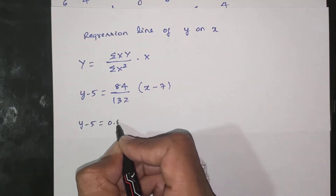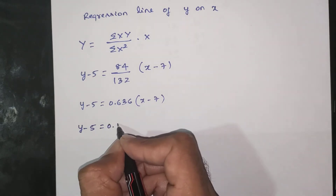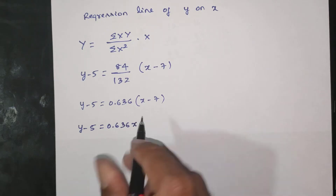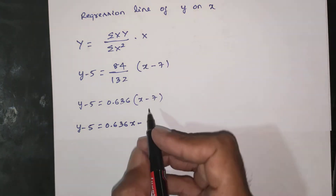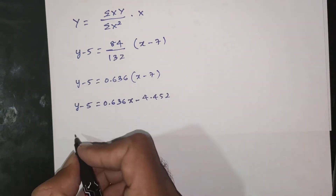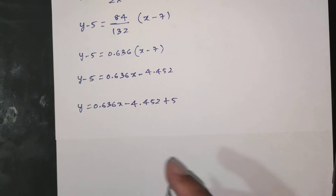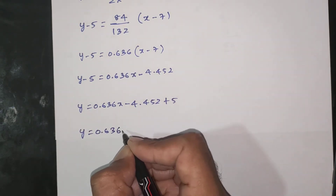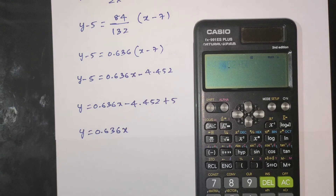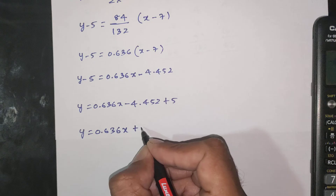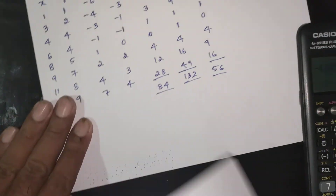So y − 5 = 0.636 × (x − 7). Expanding: y − 5 = 0.636x − 0.636×7. Now 0.636×7 = 4.452. So y − 5 = 0.636x − 4.452. Therefore y = 0.636x − 4.452 + 5, which gives y = 0.636x + 0.548. This is the equation of the regression line of y on x.